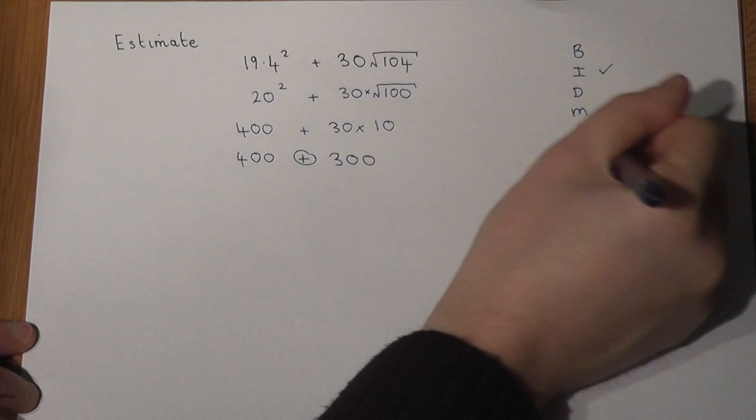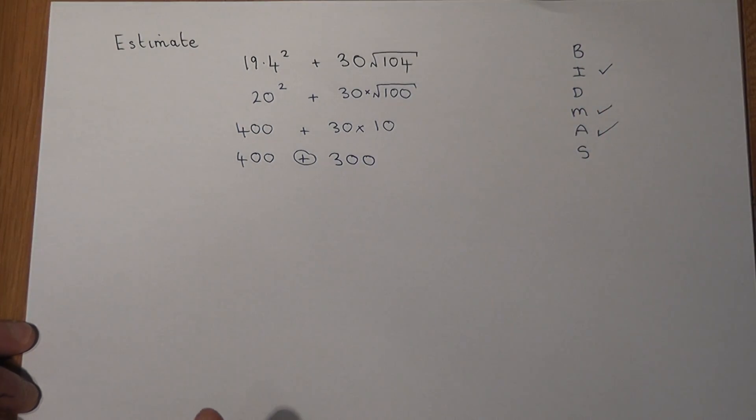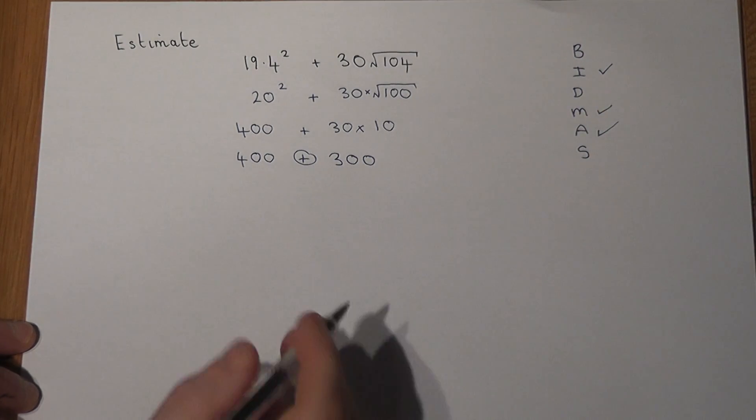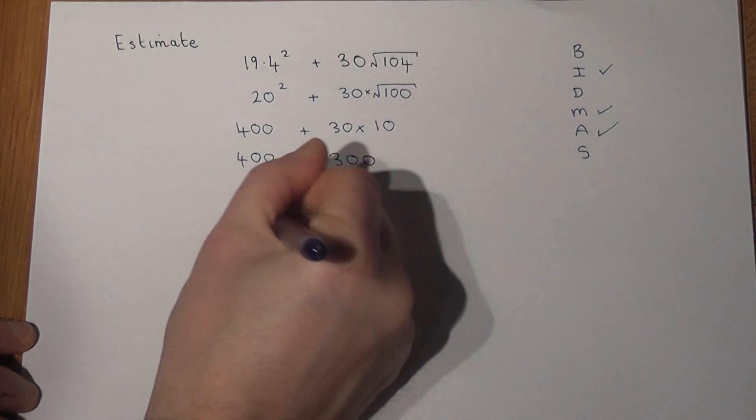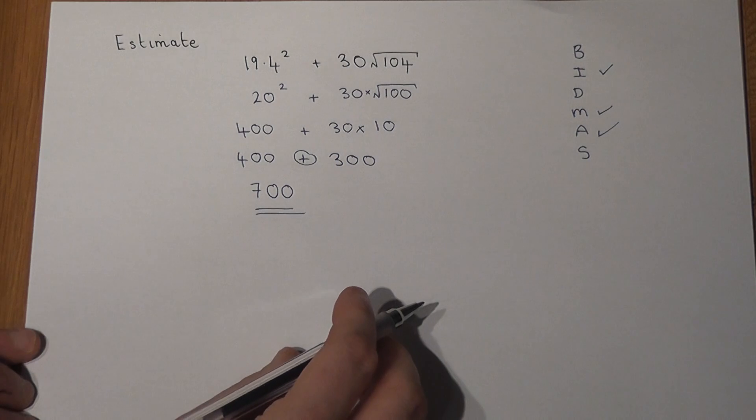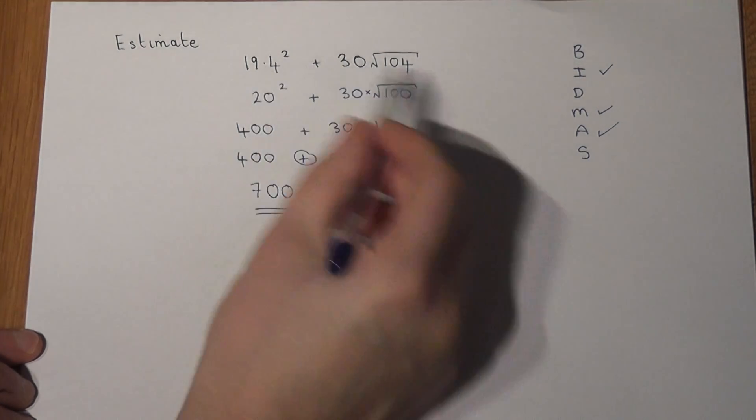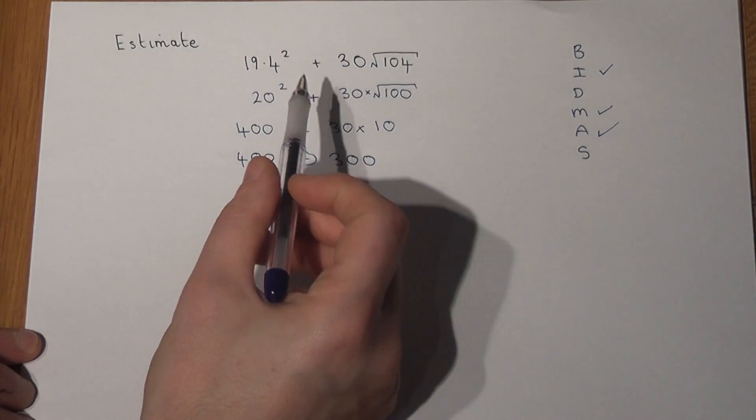And 400 plus 300 just equals 700. So the answer to this question in terms of an estimation is that this is roughly the same as 700.